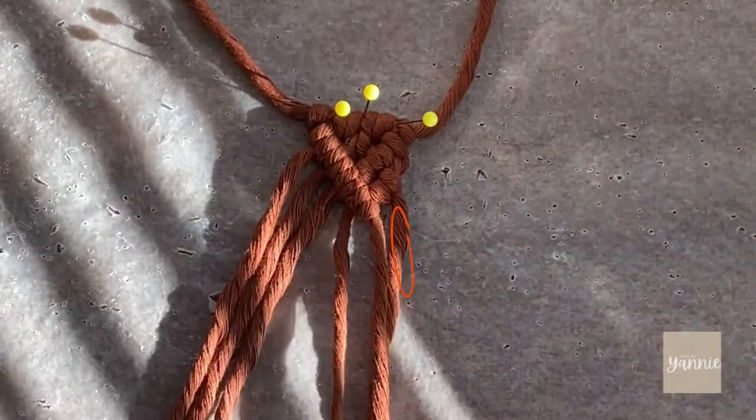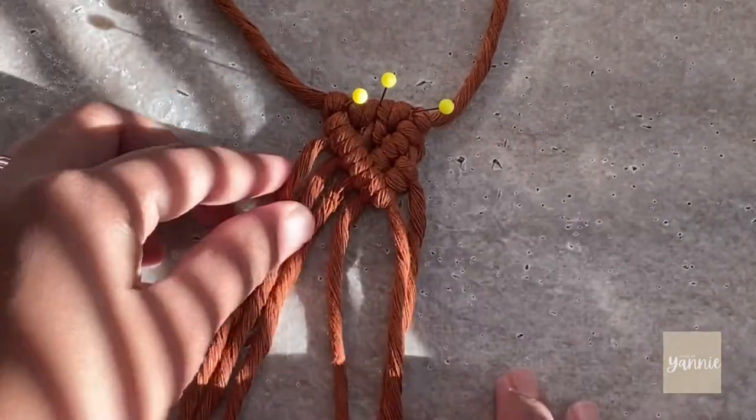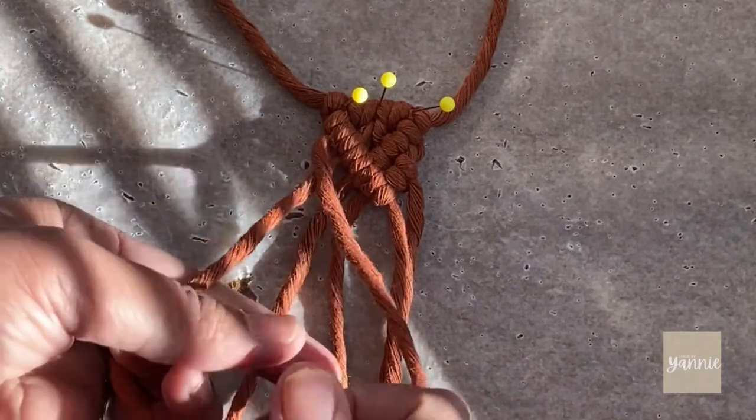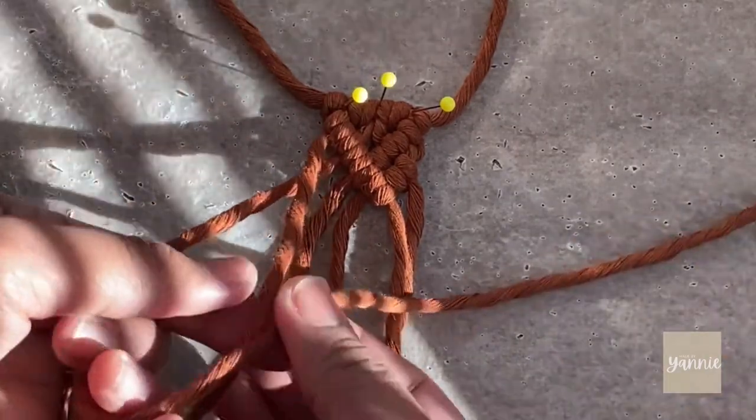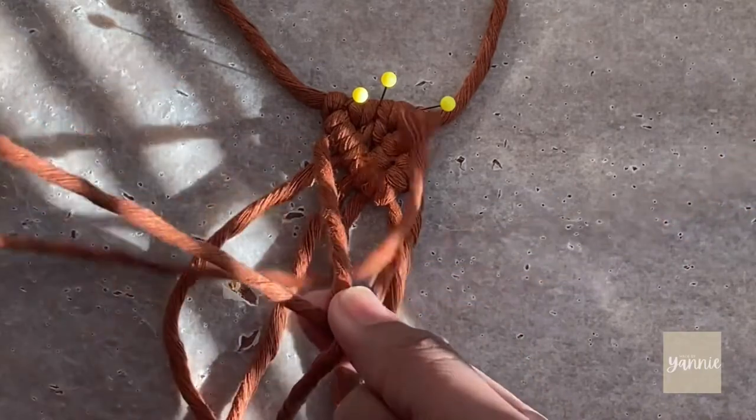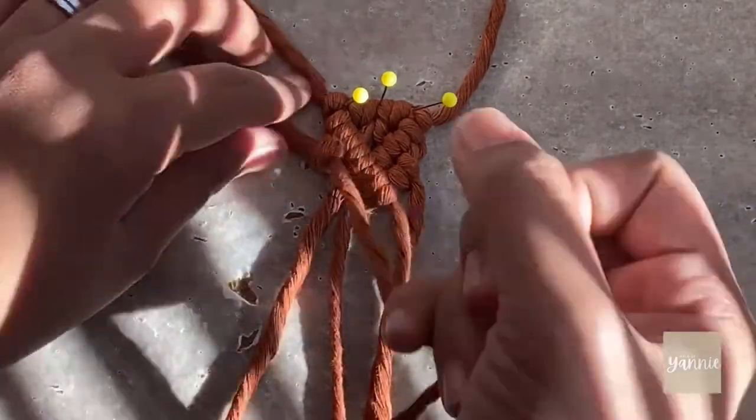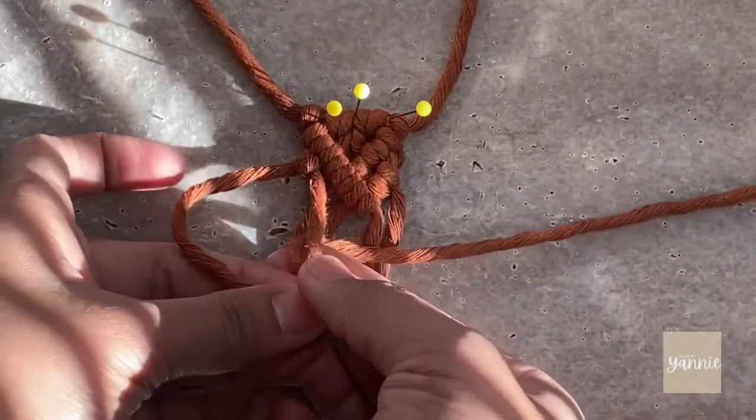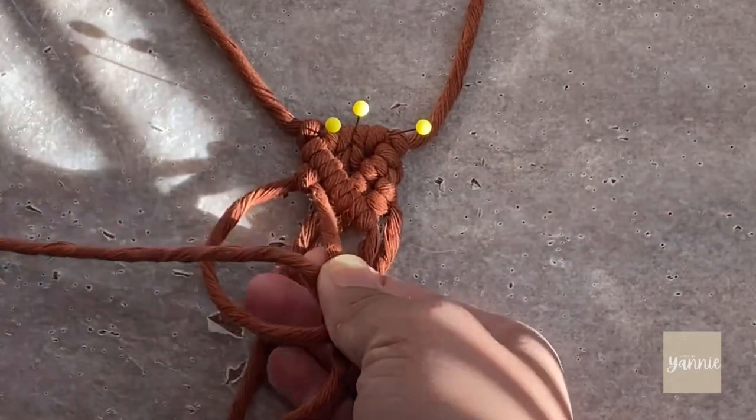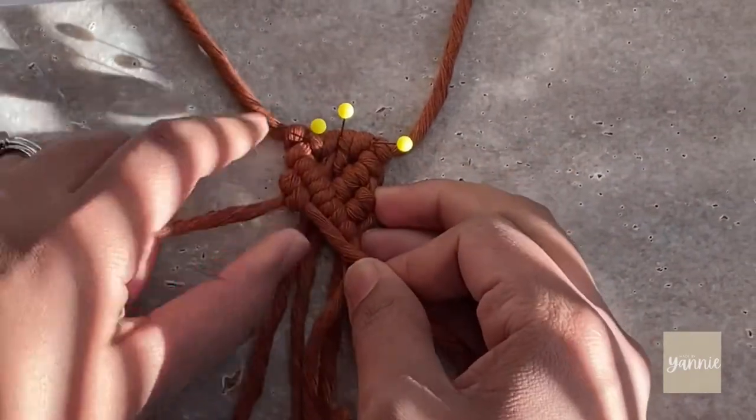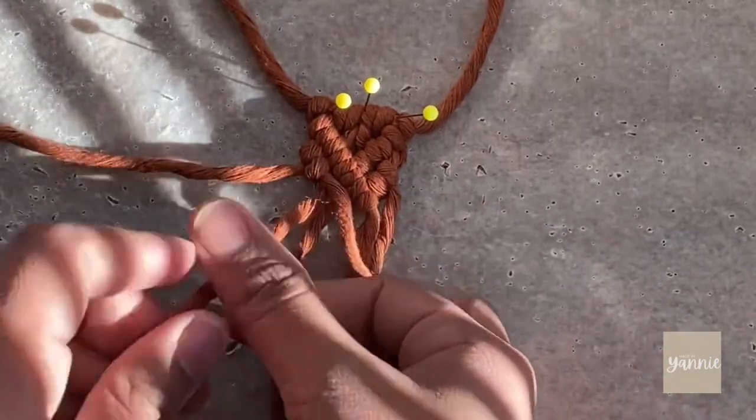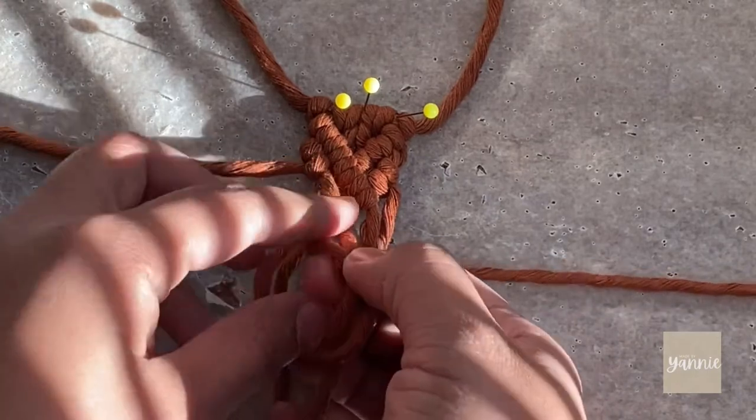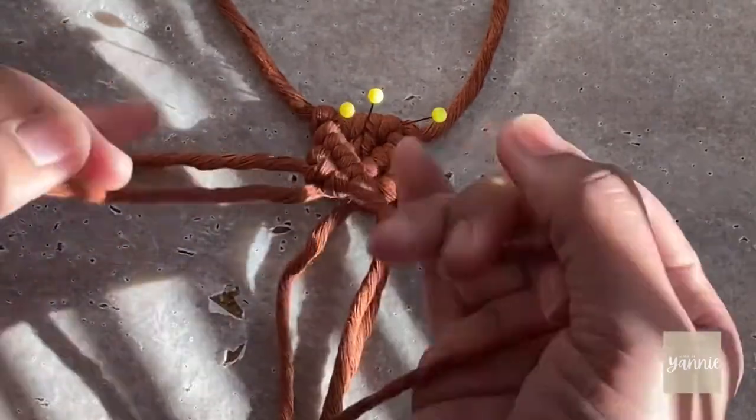Now I should have tied that last piece of working cord onto that support cord, but I just realized it while editing the video. Anyway, grab a support cord and bring it diagonally over to those three cords and create double half-hitch knots. I hope it's making sense. I'm not really sure how to explain it, but I'm doing my best to be as clear as possible.